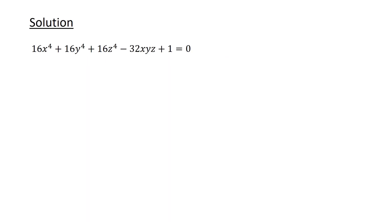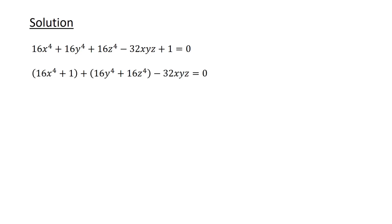First, let's rewrite the equation as 16x to the power of 4 plus 1 plus 16y to the power of 4 plus 16z to the power of 4 minus 32xyz equals 0.